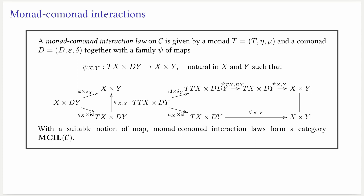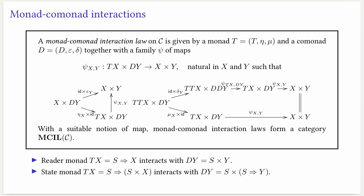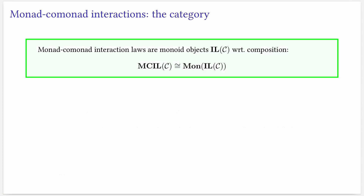As simple examples of monad-comonad interaction laws, we can retake the functor-functor interaction law examples we saw before. We can see that the reader monad interacts with the comonad on the right that acts by premultiplication, using the interaction law we presented before. Similarly, the state monad interacts with the costore comonad in the way we presented before for functor-functor interaction laws. Just as monads are monoids in the category of endofunctors, monad-comonad interaction laws are monoid objects in the category of functor-functor interaction laws, when we take composition as the corresponding monoidal structure.